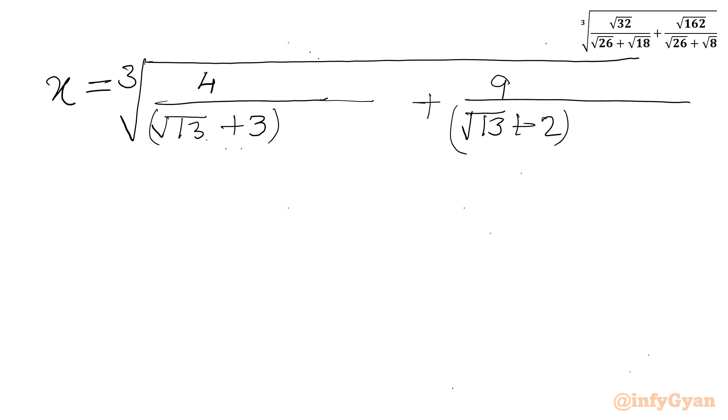Now let us multiply the conjugate of our denominator. So I need to multiply root 13 minus 3 here in numerator and denominator, and root 13 minus 2 here we will multiply in the numerator and denominator.